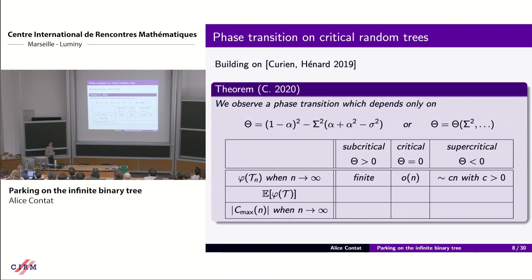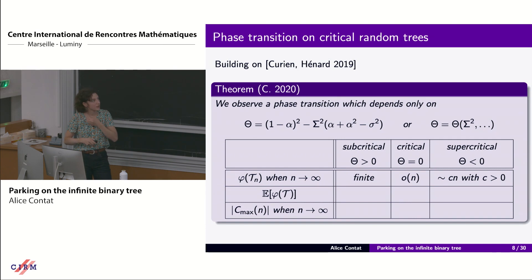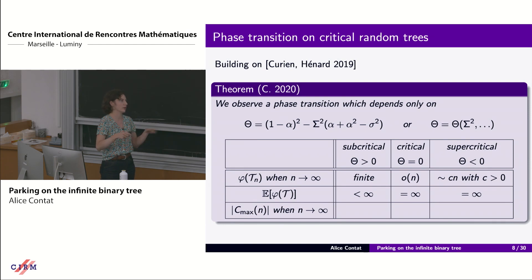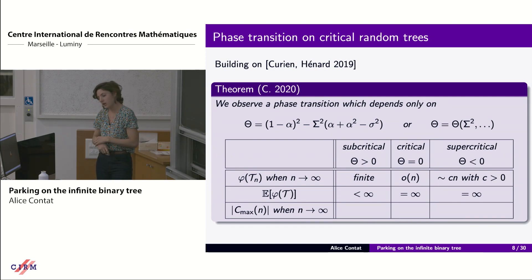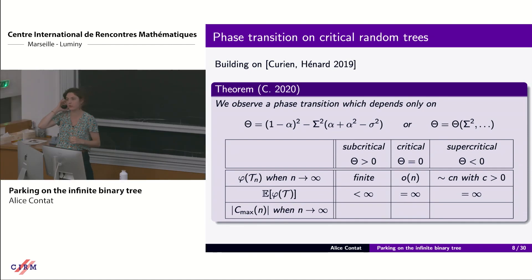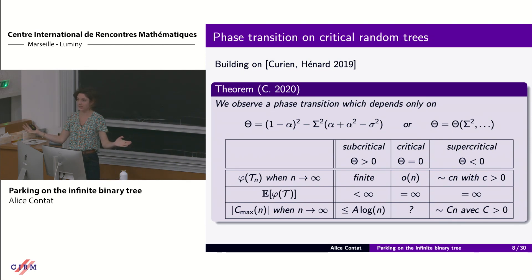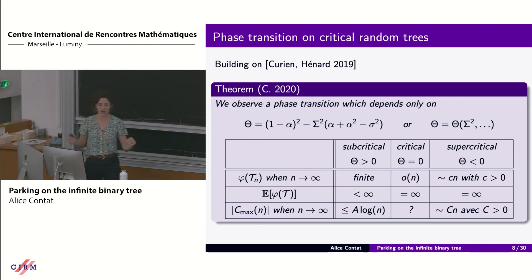For the unconditioned Galton-Watson tree at the same critical point: in the subcritical regime the expected number of outgoing cars is finite, while in the supercritical regime it is infinite. Also, clusters of parked cars in the supercritical regime are linear in the size of the tree, whereas the largest cluster of parked cars is at most logarithmic in the subcritical regime.